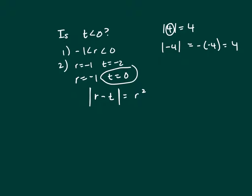So let's do the same thing here. So if what's inside the absolute value bars is positive, r minus t equals r squared. Or if it's negative, r minus t. If r minus t is negative, this negative here makes it positive.